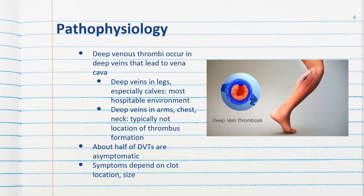There are also deep veins in the arms, chest, and neck, but thrombi typically do not form in these locations, although they can. Approximately one-half of DVTs are asymptomatic. If symptoms are present, they depend on the clot's location and size.